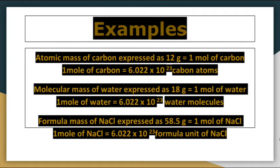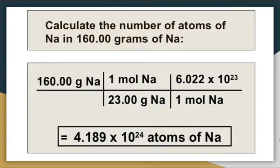Formula mass: The formula mass of NaCl is expressed as 58.5 gram. It means 58.5 gram of NaCl is equal to 1 mole of NaCl. Therefore, 1 mole of NaCl contains 6.022 × 10²³ formula units of Na⁺ and Cl⁻.